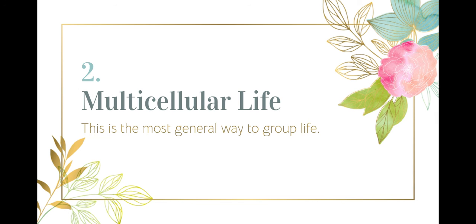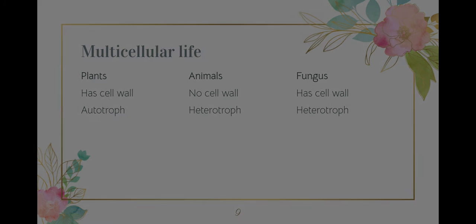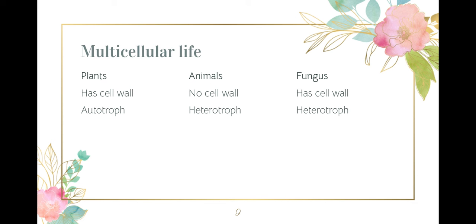Within multicellular life, we have three additional kingdoms: plants, animals, and fungus. Plants will have a cell wall and they will be an autotroph. Animals will not have a cell wall and they will be a heterotroph. And finally, a fungus will have a cell wall and it will be a heterotroph. So it comes down to how do you get energy, and do you have a cell wall?